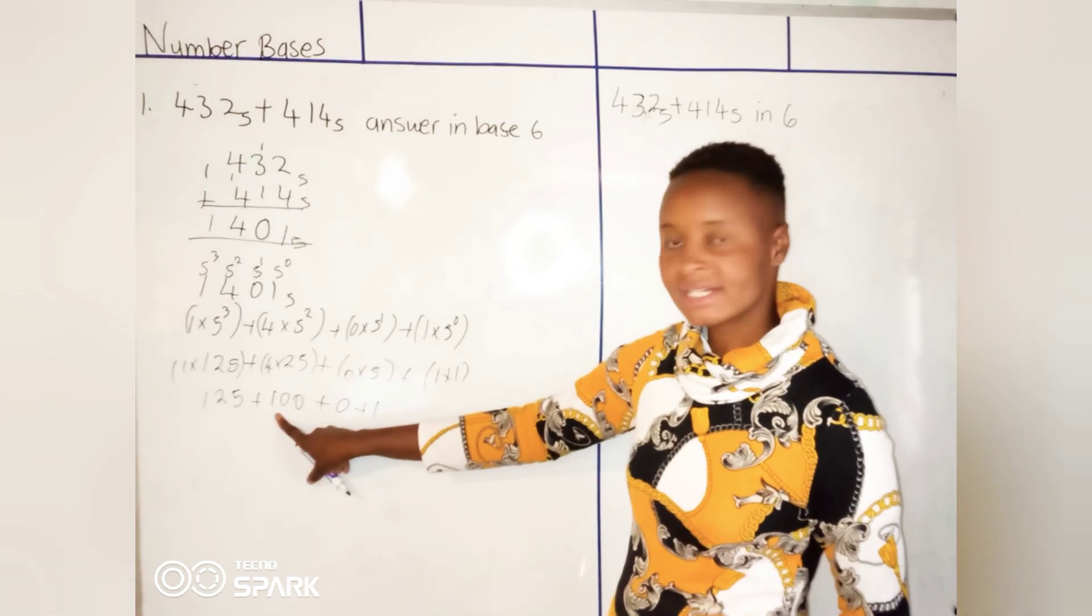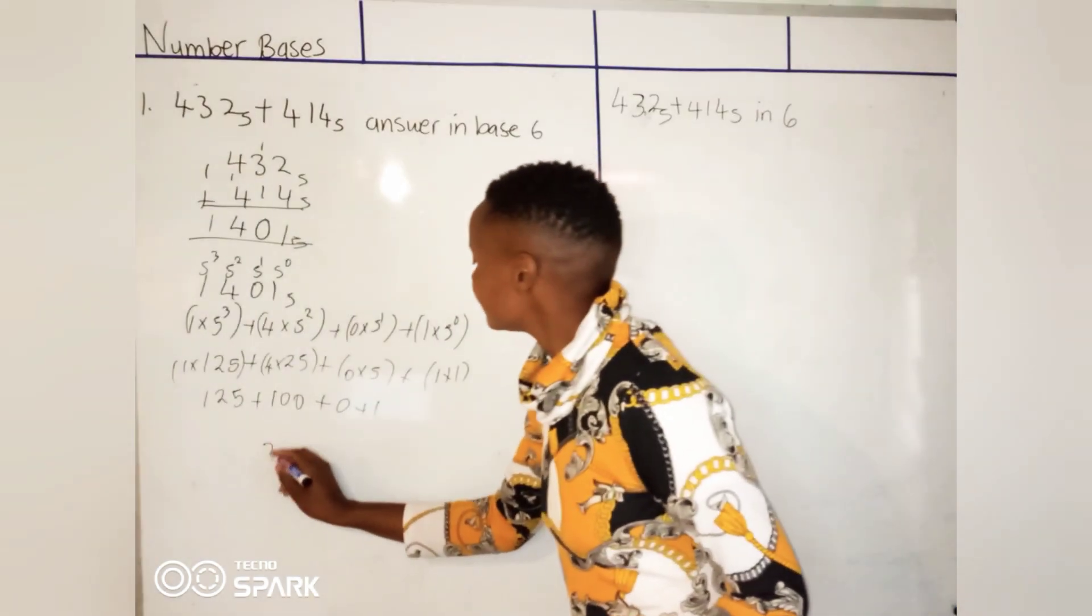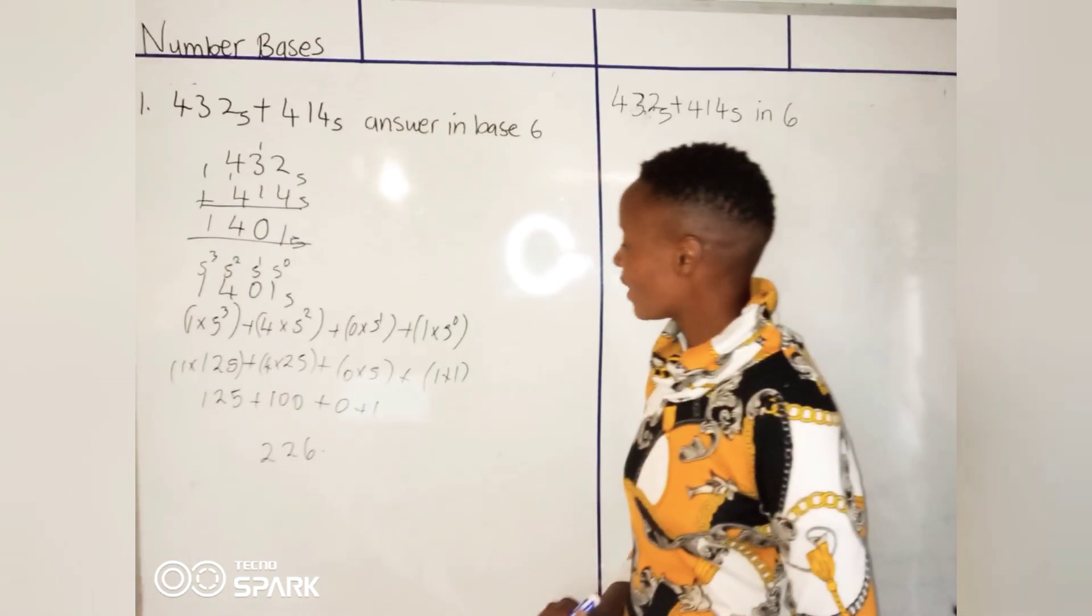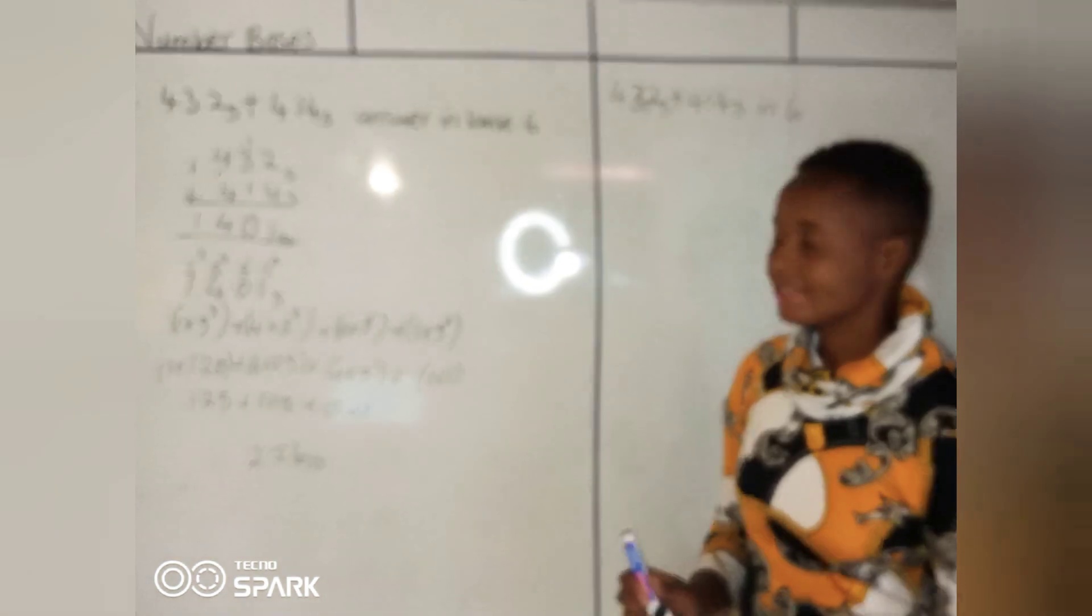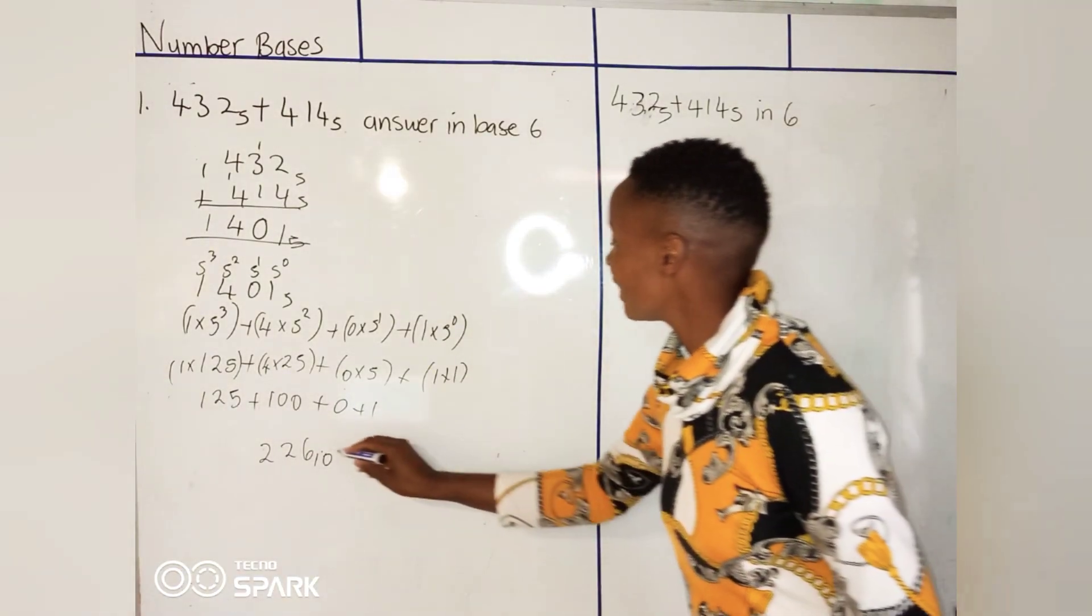So we have 125 plus 100, that's 225, right? 225 plus 1 is 226 base 10. Remember they said they want their answer in base 6, so which means we are not yet done.